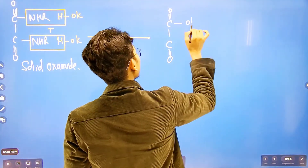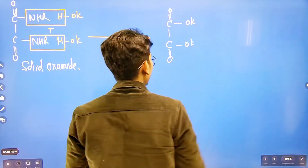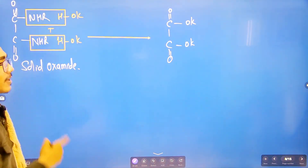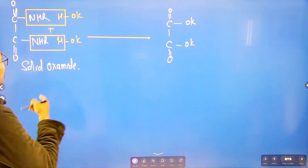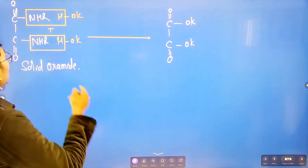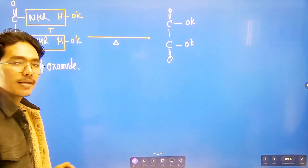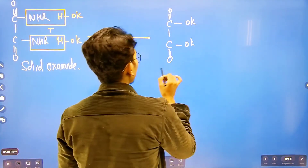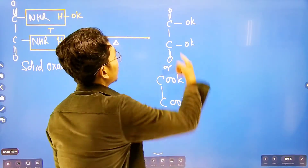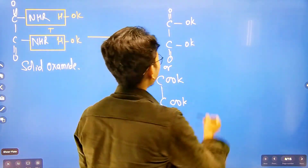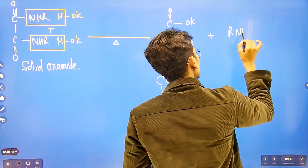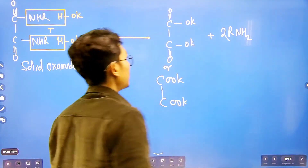The solid diethyl oxalamide product is heated with KOH solution. When you heat the solid oxamide with KOH, it undergoes hydrolysis. The COOK (potassium oxalate) is formed, and then the molecule separates, releasing the primary amine.